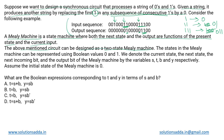The above-mentioned circuit can be designed as a two-state Mealy machine. For performing this particular operation we have to design a two-state Mealy machine in which the states can be represented using boolean values 0 and 1. We denote the current state, next state, next incoming bit, and the output bit using the variables s, t, b, and y respectively. First let us design the machine itself, and then we will see what values those variables take.